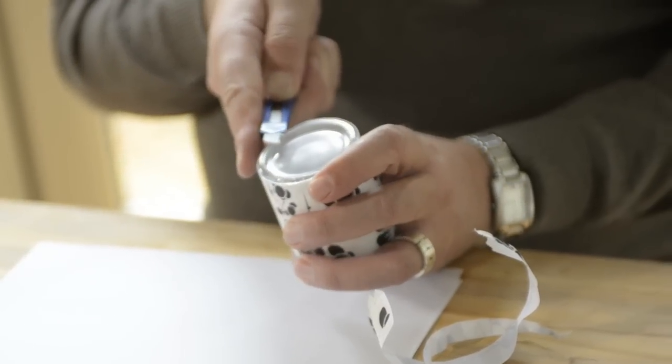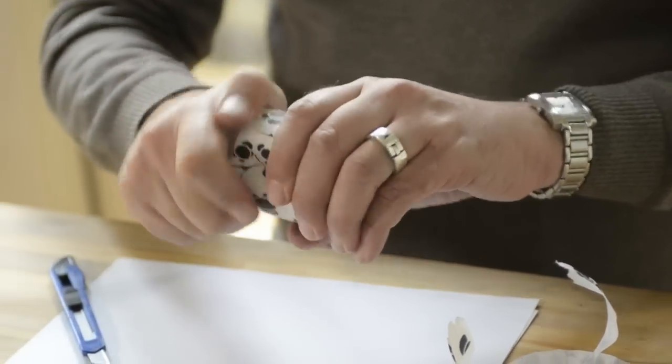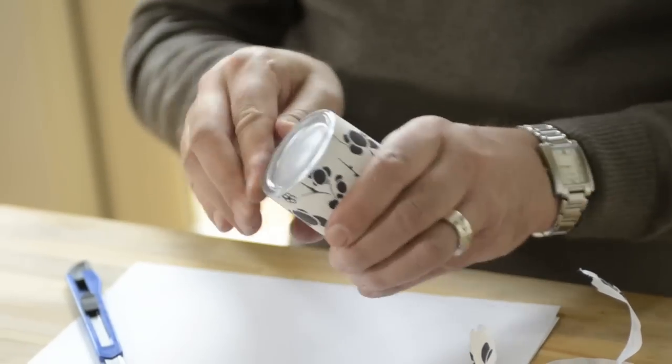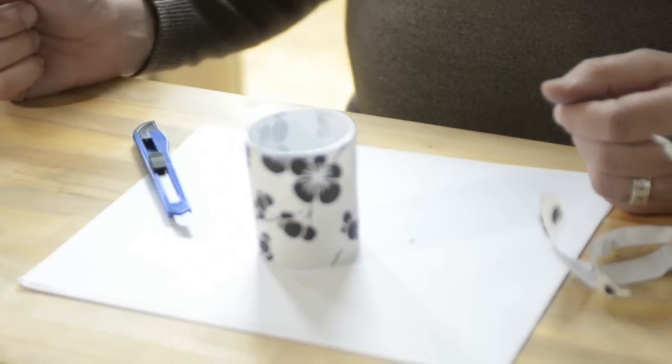And then just finish the bottom up like so. And I just wrap my fingers around it just to burnish the edge of the paper against the glass, and that's the rough form.